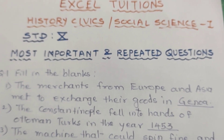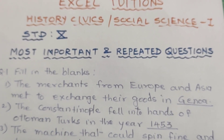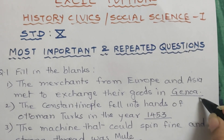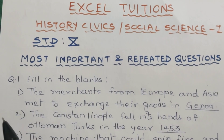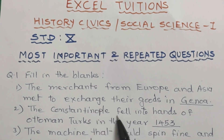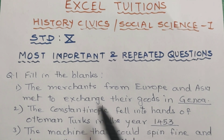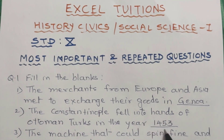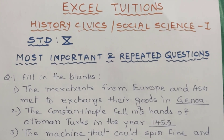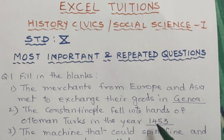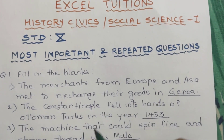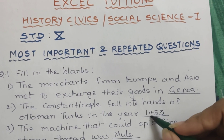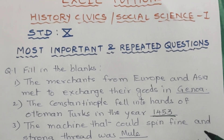1. The merchants from Europe and Asia met to exchange their goods in — answer is Genova. 2. The Constantinople fell into the hands of Ottoman Turks in the year — answer is 1453.